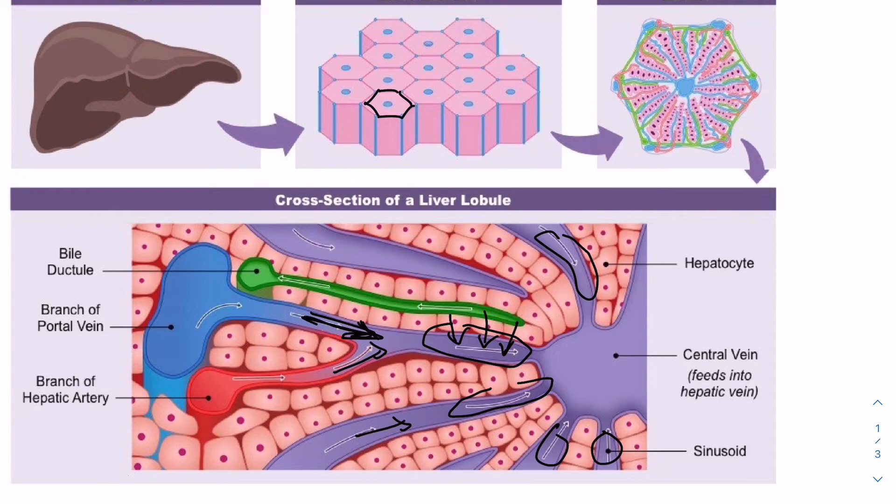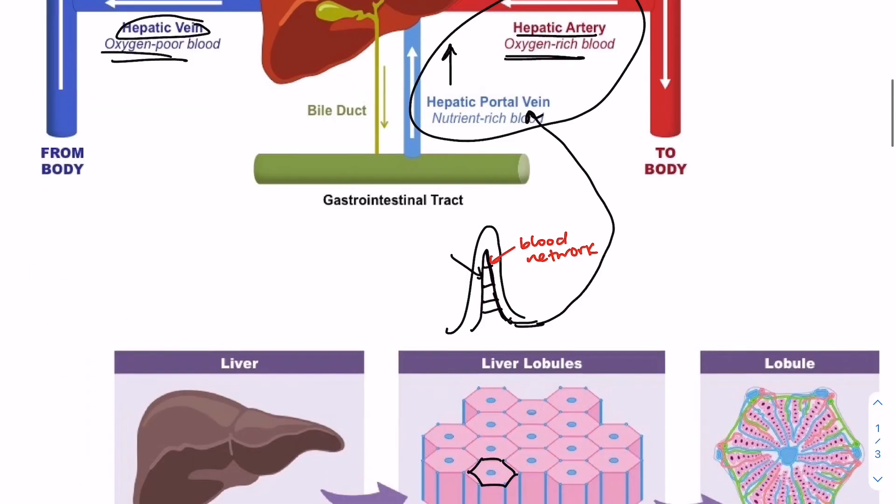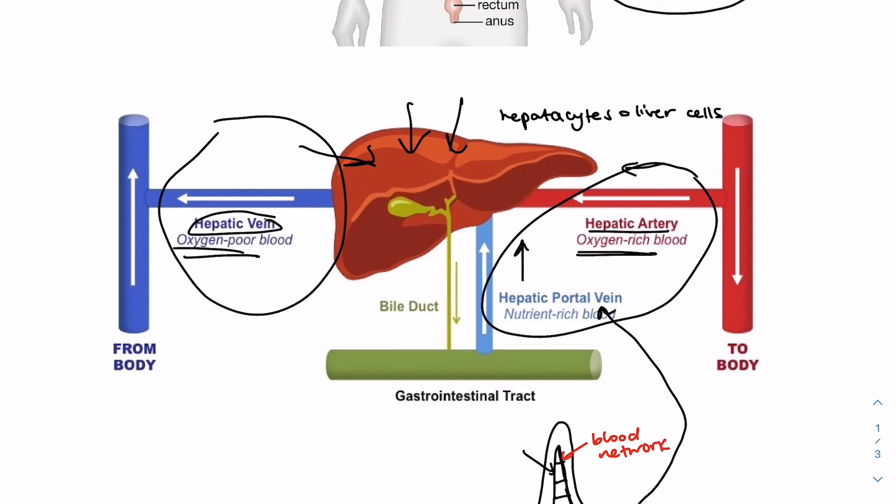Then, the sinusoids drain into this central vein, which feeds deoxygenated blood into the hepatic vein, which is this blood vessel right here.